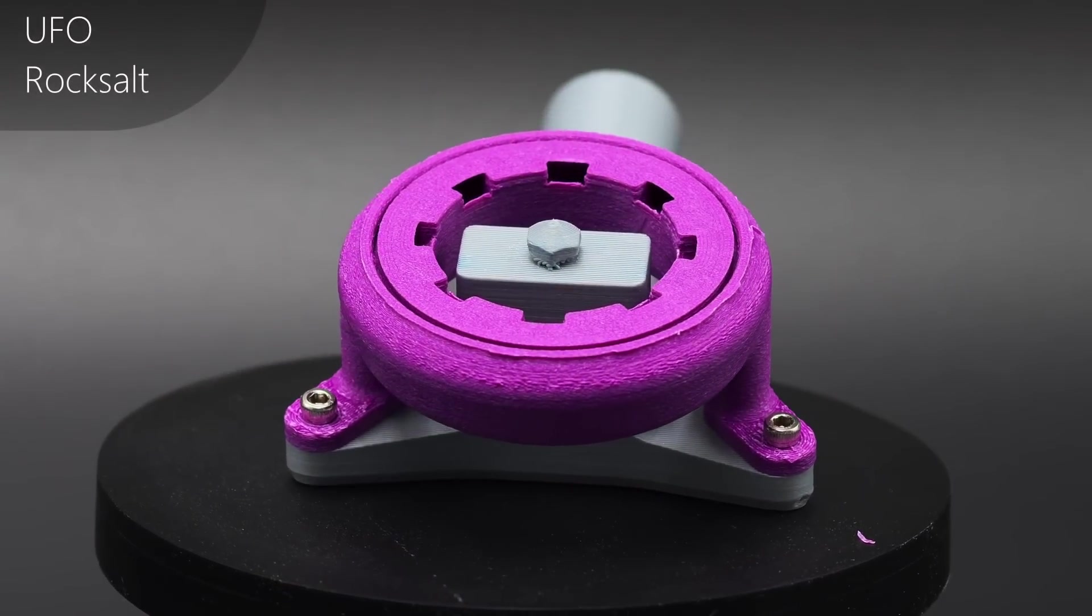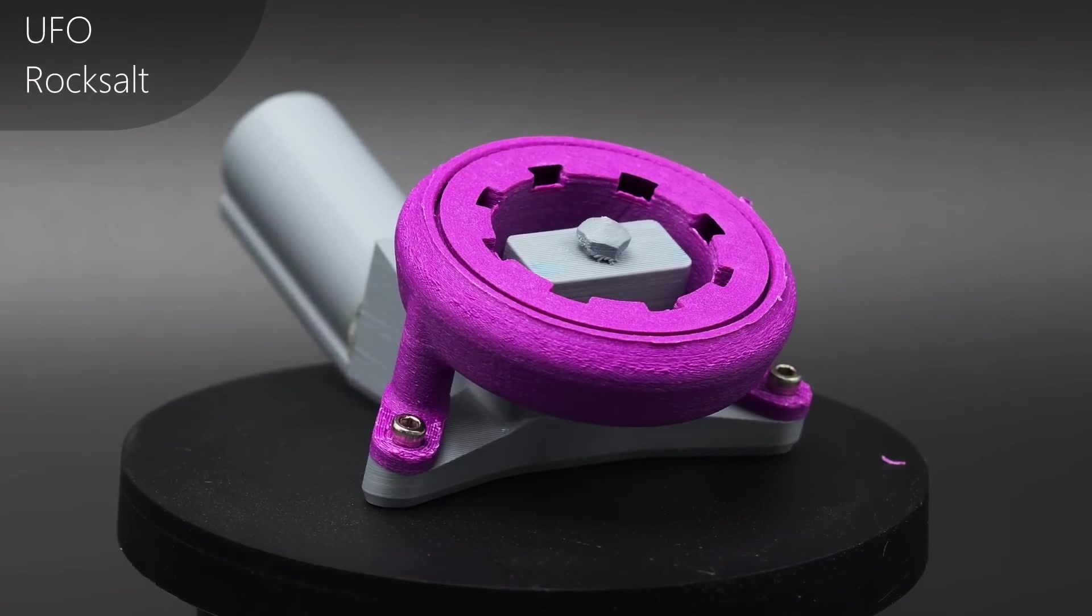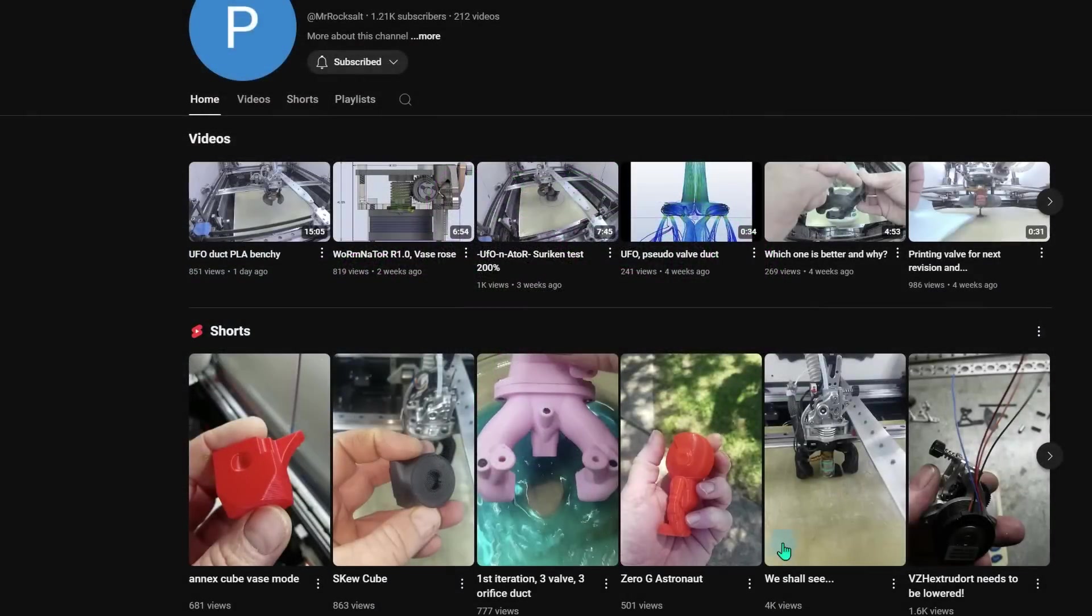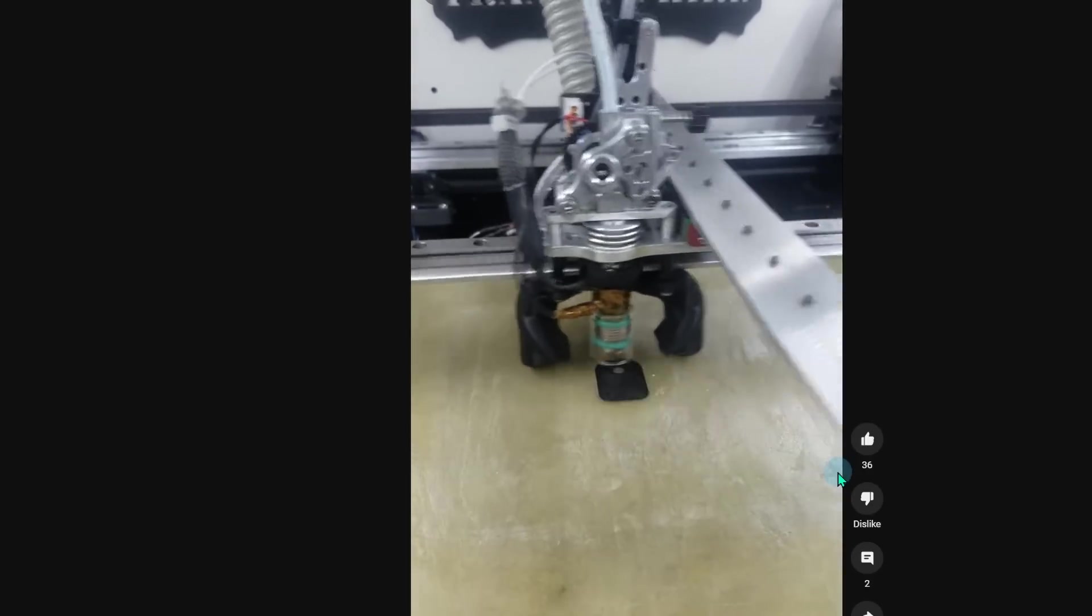First up we have this very cool duct called the UFO. This one was designed by Rock Salt and he has quite a bit of experience with ultra high-speed printers. He's been designing his own ducts for high-speed printing for quite a while now. He also has a channel of his own so if you want to check it out I will leave a link down below.